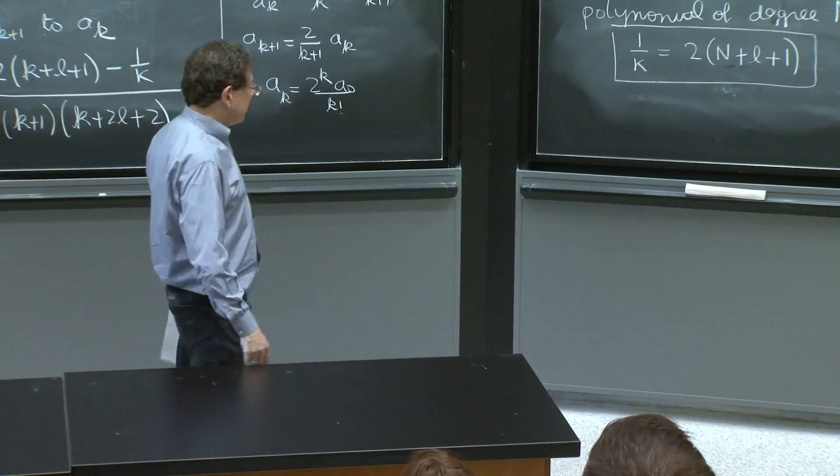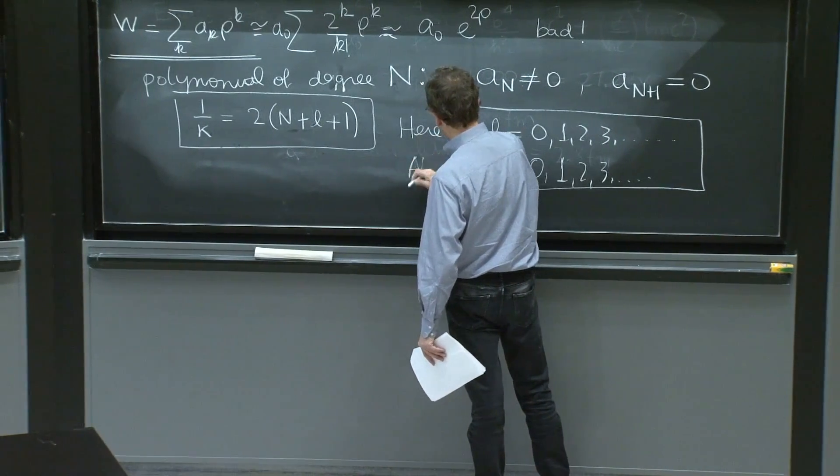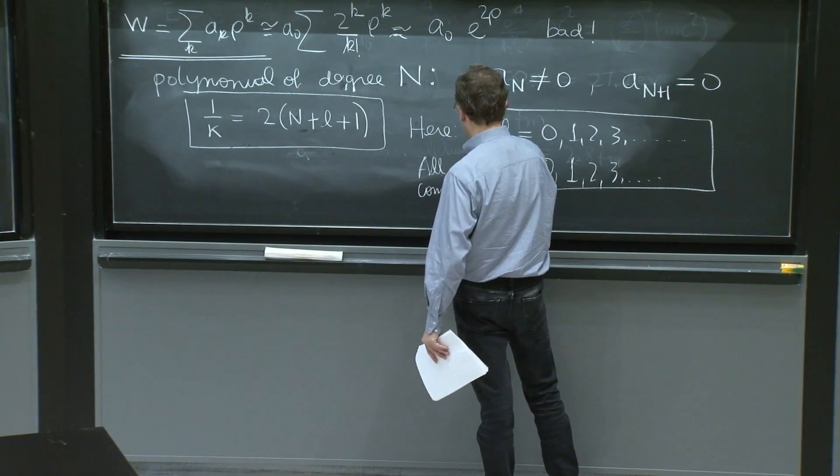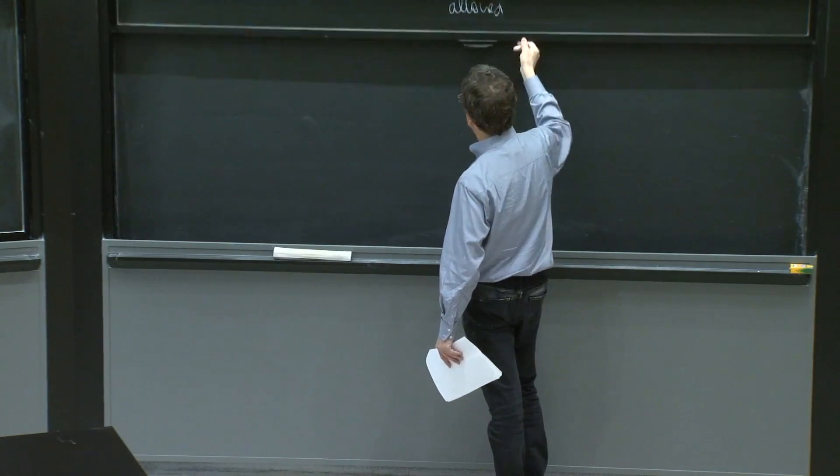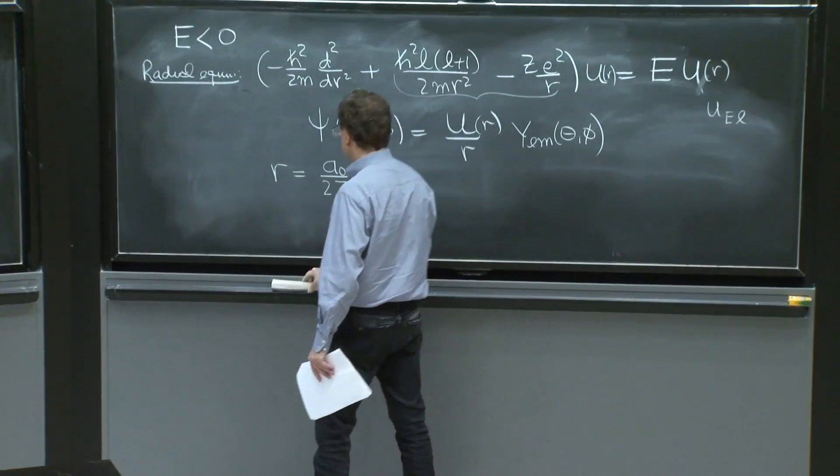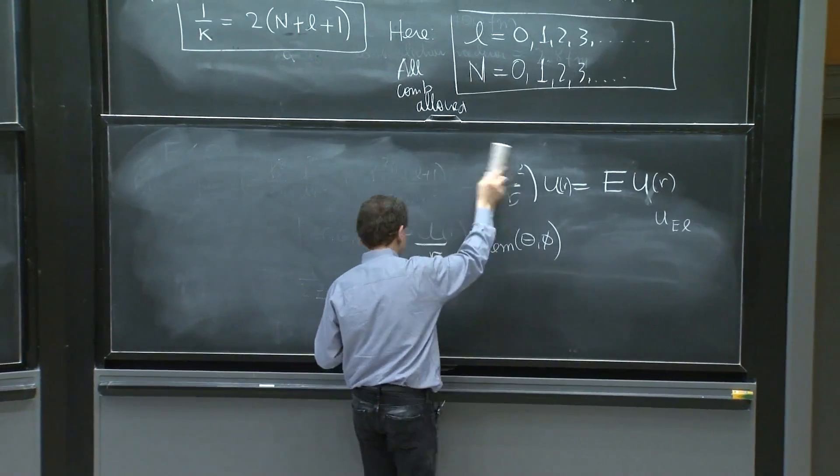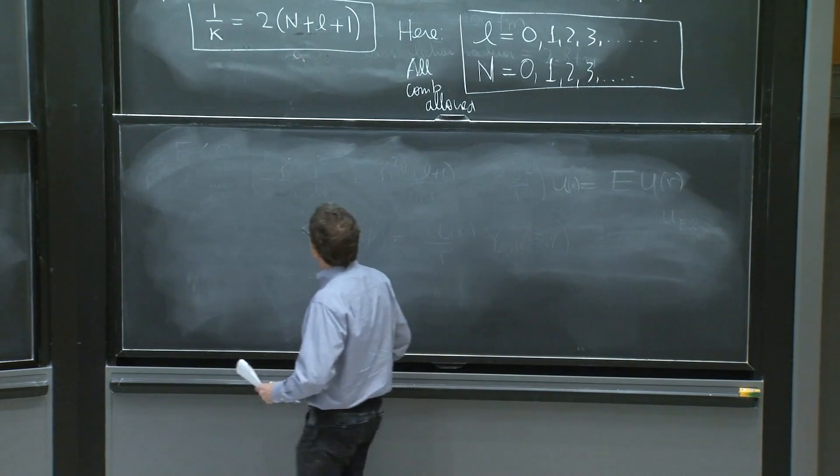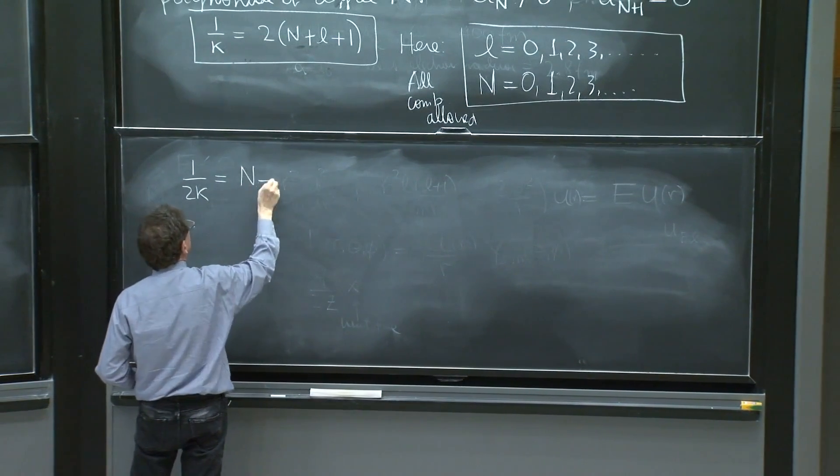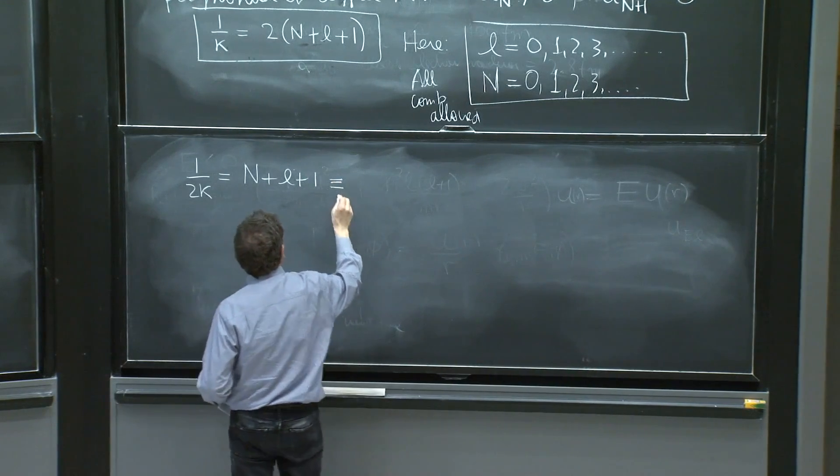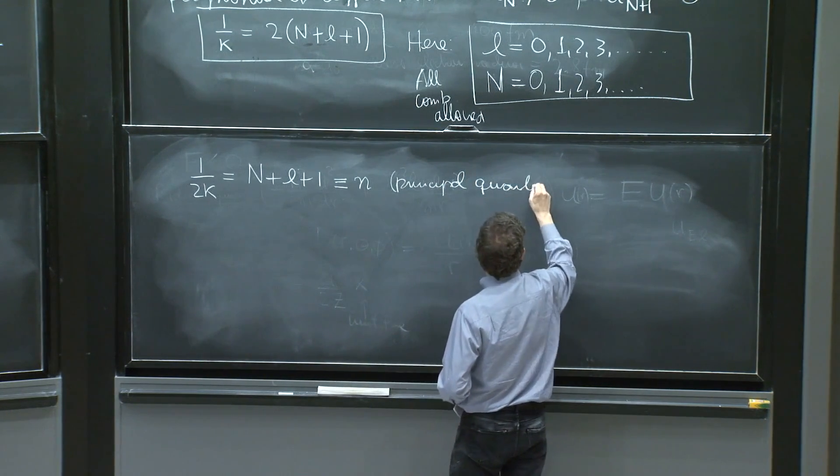So here is a little bit of a definition that we follow. So all of these are allowed, all allowed, all combinations allowed. So L can be anything, and capital N can be anything. And let's define a slightly better version of this thing. So let's move the 2 down, 1 over 2 kappa. That's n plus L plus 1. And let's call all this n, or the principal quantum number.